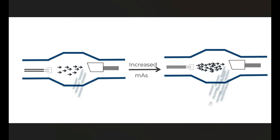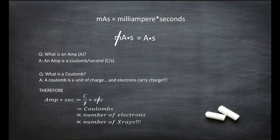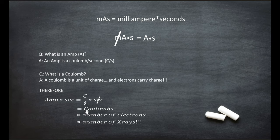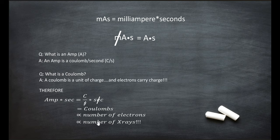mAs is a control that's directly proportional to radiation dose. If we double the mAs, we're going to double the radiation dose to the patient. mAs is milliampere times seconds. If we strip away the milli prefix, we're left with amps and seconds. An amp is a Coulomb per second. A Coulomb is a unit of charge, and we know that electrons carry charge. So amps times seconds is Coulombs per second times seconds — the seconds cancel and we're left with just Coulombs. Since Coulombs is a unit of charge and electrons carry charge, that's proportional to the number of electrons, which is proportional to the number of x-rays. This is how we go from mAs to the number of x-rays.